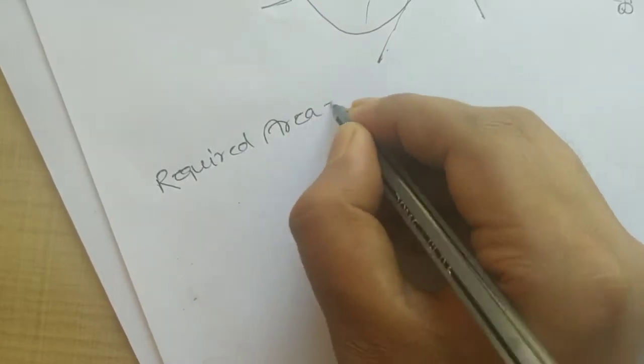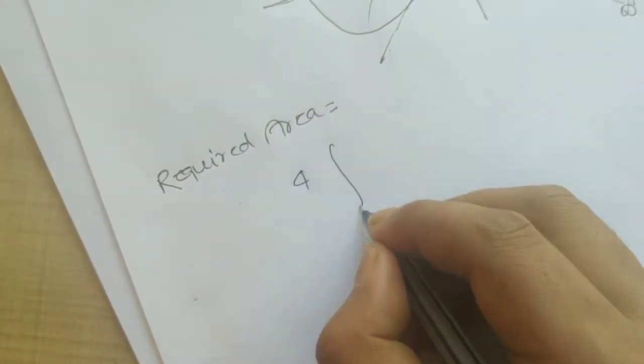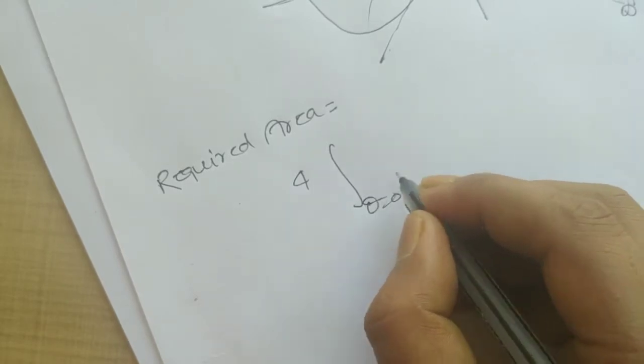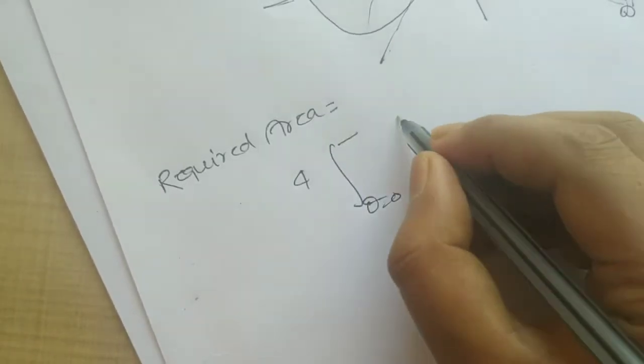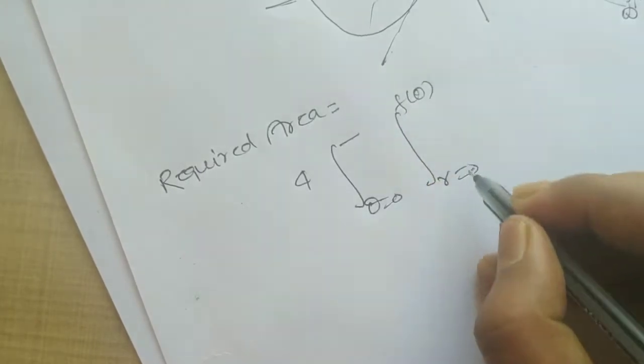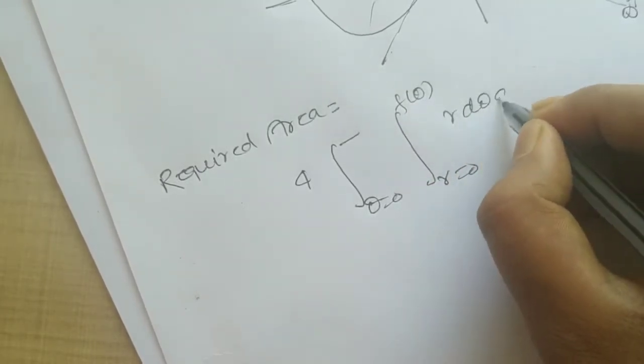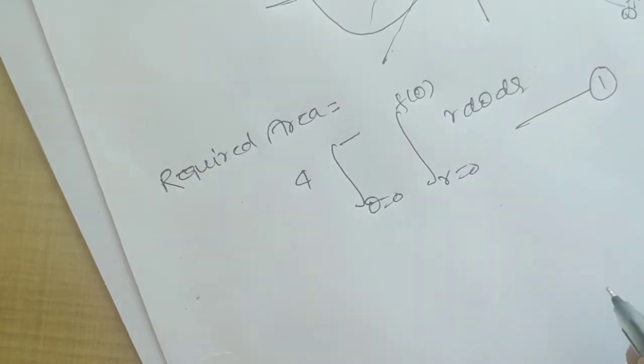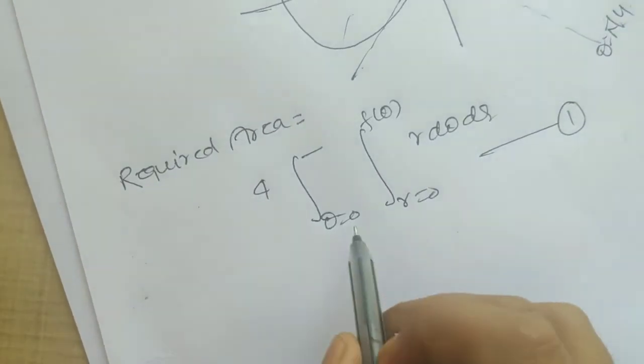What is the required area? It's 4 times the integral. We will know that the r limit is 0 to the function of theta, and the formula is r dθ dr. This is the theta.